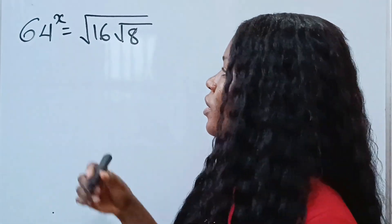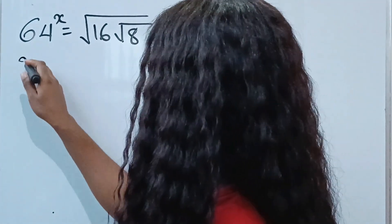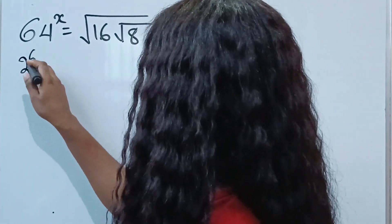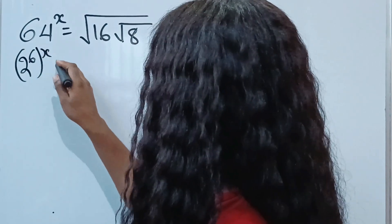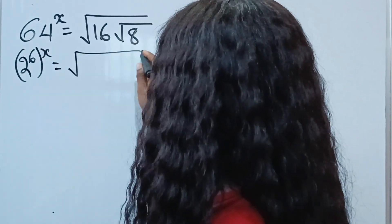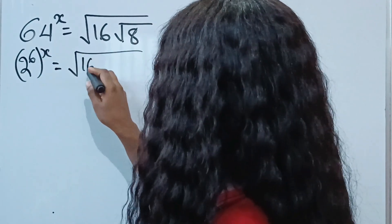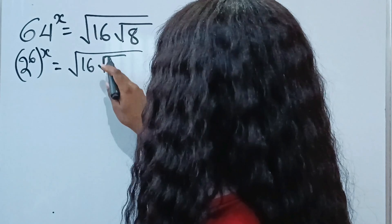Let's solve for x. Now, 64 is the same thing as 2 to the power of 6, raised to the power of x, is equal to the square root of 16 root 8.